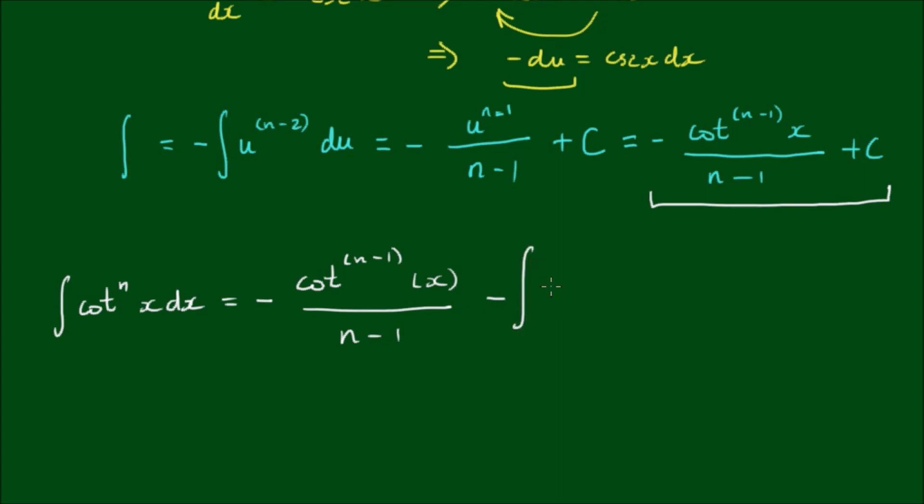The second integral remains, so it's the integral of cot to the n minus 2 power of x dx, and we've got to add the integration constant plus c on the end. So we have now just derived a reduction formula for the integral of cotangent of x to the nth power.